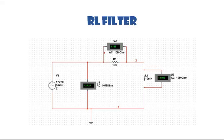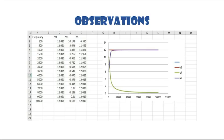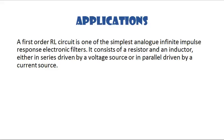Now, RL filters. This is also the same — we just need to replace the capacitor with an inductor and the rest of the circuit is the same. The observations for the same frequencies show the voltage across the resistor and inductor. This graph was plotted with the help of MS Excel applications.